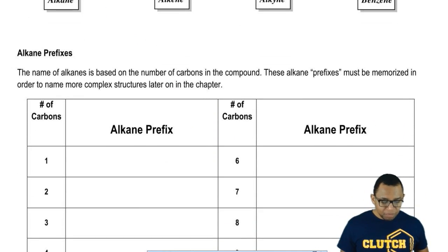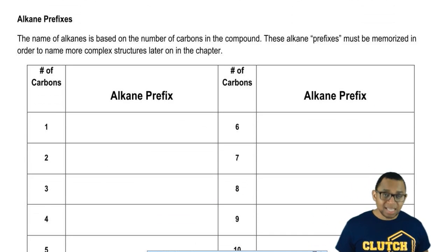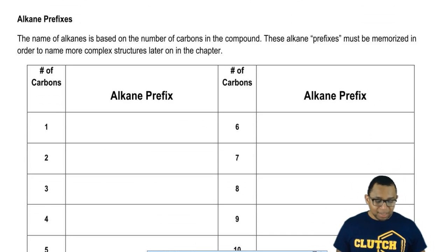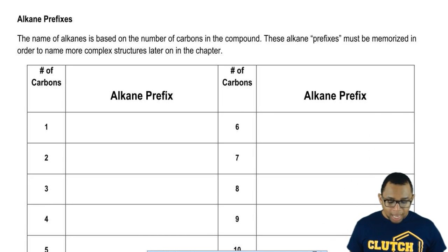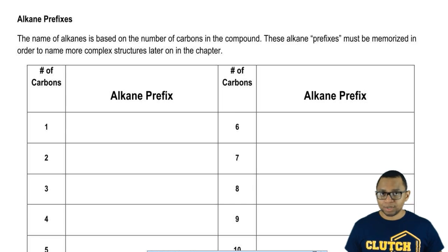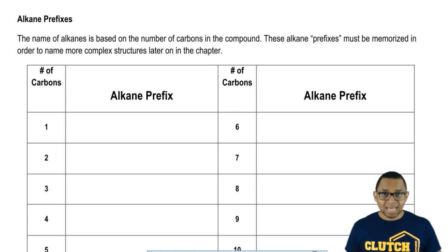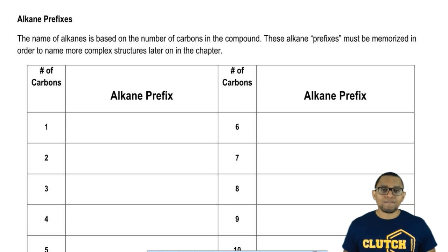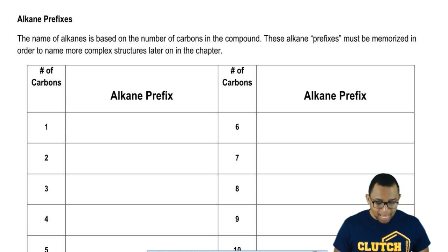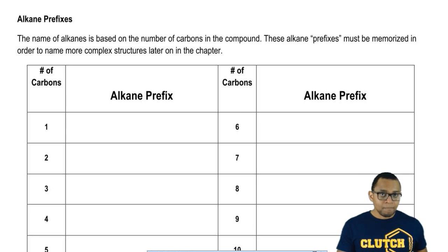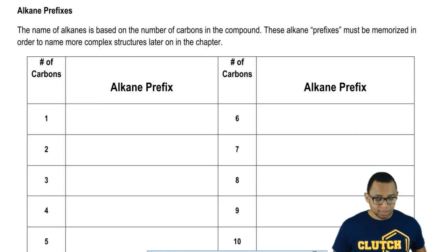The name of alkanes is based on the number of carbons in the compound. These alkane prefixes that go in the front must be memorized in order to name more complex structures later on in the chapter. We're going to be dealing with alkanes first, then move on to alkenes and then alkynes, and then we're going to be incorporating things called functional groups — other things that look very different from them — and they're all based initially on memorizing these prefix names.